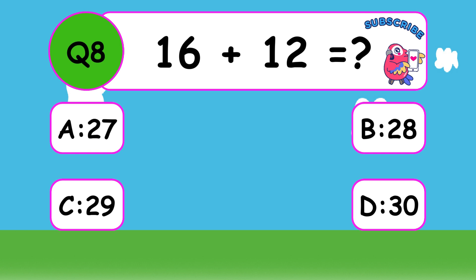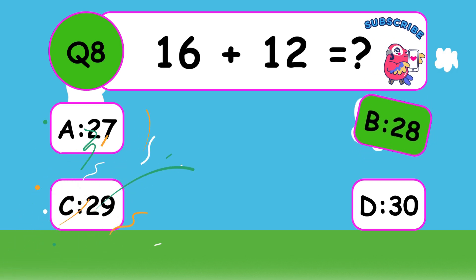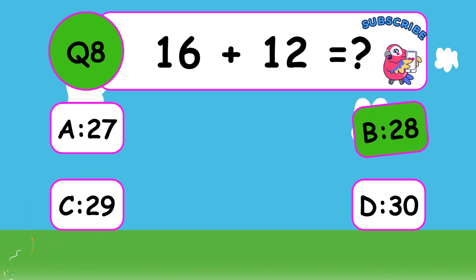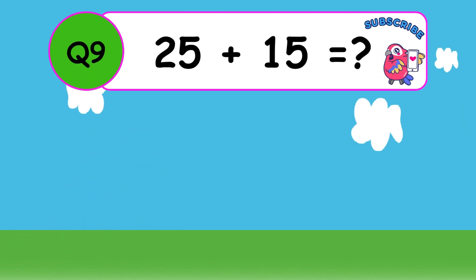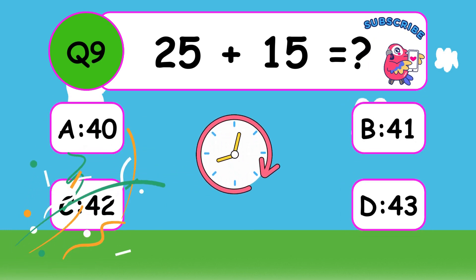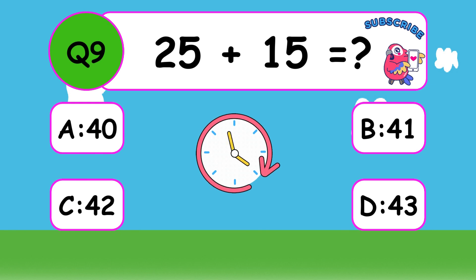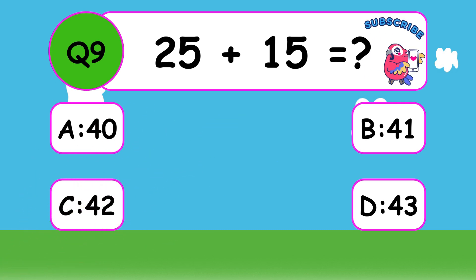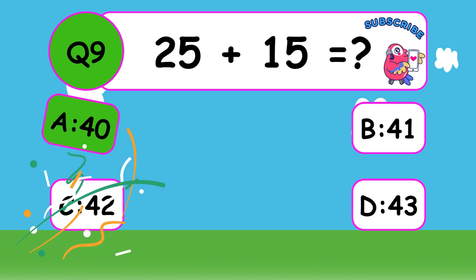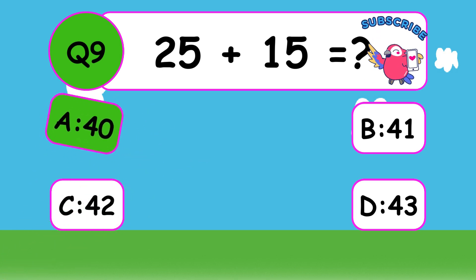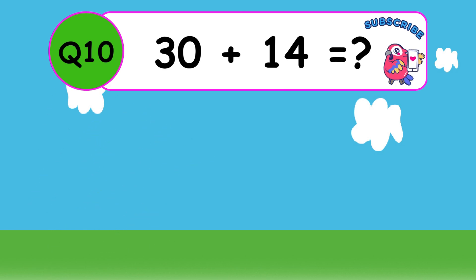What is 16 plus 12? The answer is B, 28. 16 plus 12 equals 28. What is 25 plus 15? The answer is B, 40. 25 plus 15 equals 40.